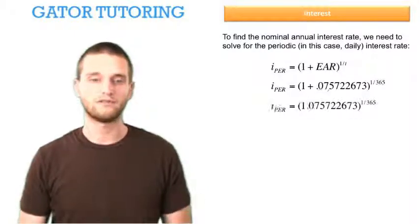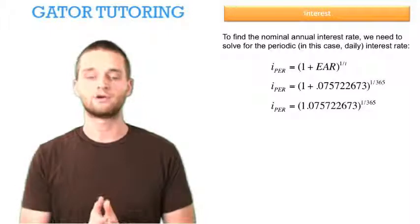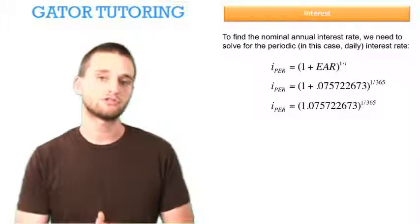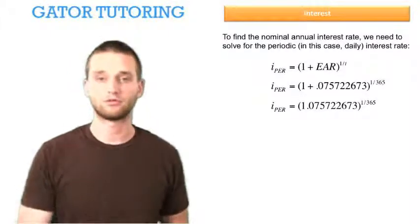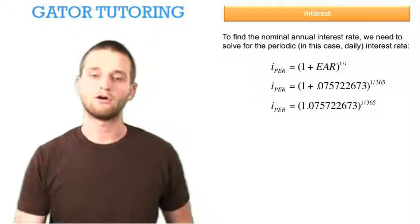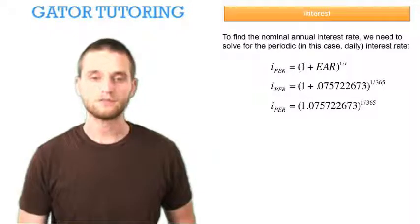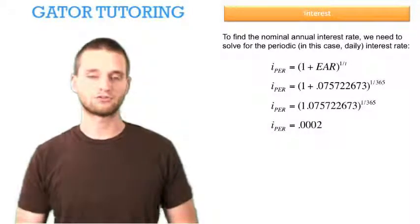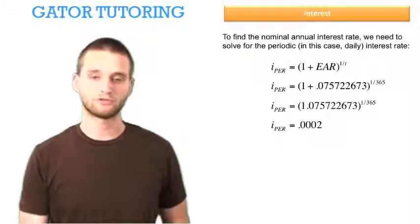So we add 1 to the effective annual interest rate. When we're using this formula, we have to put the interest rate in as a decimal as opposed to a percentage. So we get 1.0757 raised to the 1 over 365, and we find that our periodic interest rate is .0002.